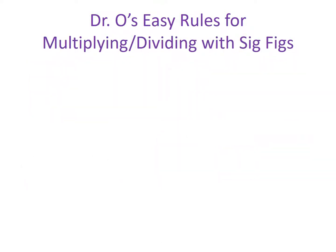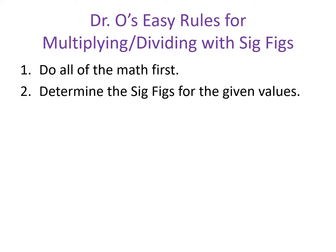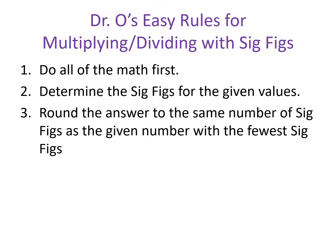Let's do a recap. When multiplying or dividing with significant figures: first, do all the math; second, determine the significant figures for the given values — knowing those three easy rules for determining significant figures really helps when zeros show up; third, round your answer to the same number of significant figures as the given number with the fewest, going back to identify which given value has the fewest significant figures.